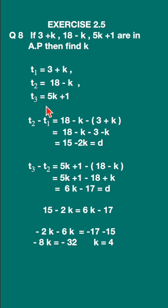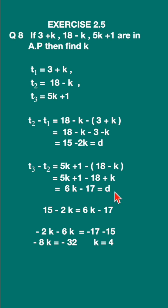Now let us do t3 minus t2. Write down the third term minus the second term, open the bracket, and simplify. You will get 6k - 17, which equals d. Now since they are in AP, this d will be equal, so 15 - 2k = 6k - 17.